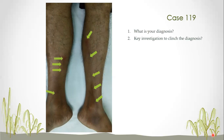The lesions are present on both legs and if you closely observe, they are along the saphenous vein — the great saphenous vein track. The description given was very straightforward: a cord-like, tender, and erythematous-looking lesion, and the photograph showed exactly along the great saphenous vein. So this was superficial venous thrombosis with some inflammation.